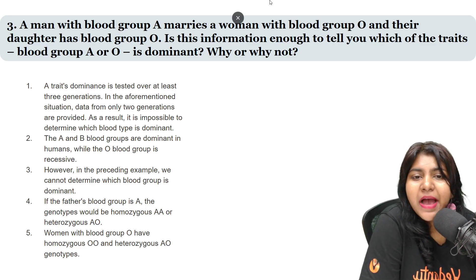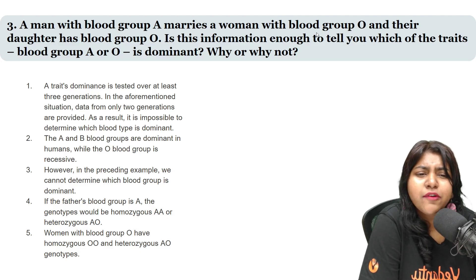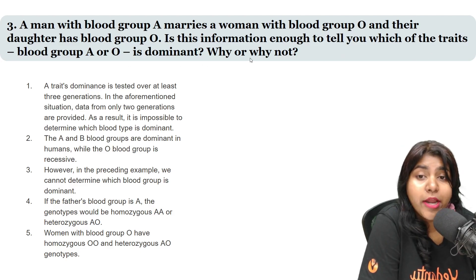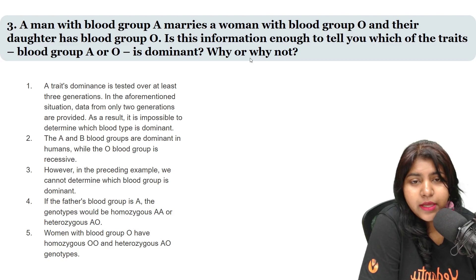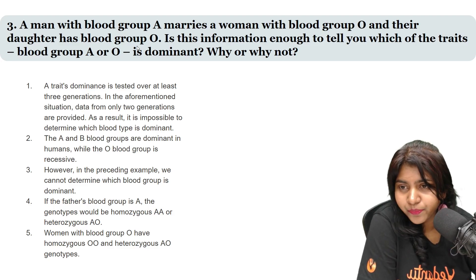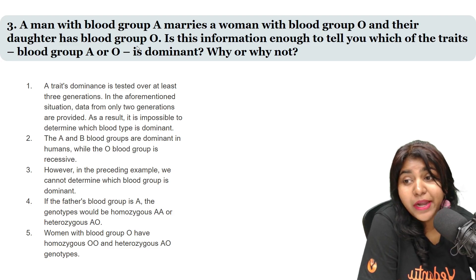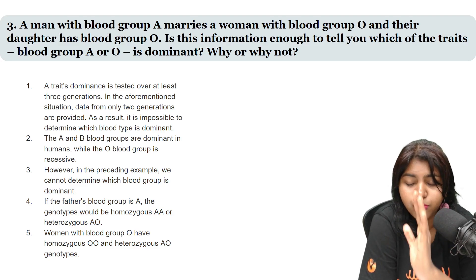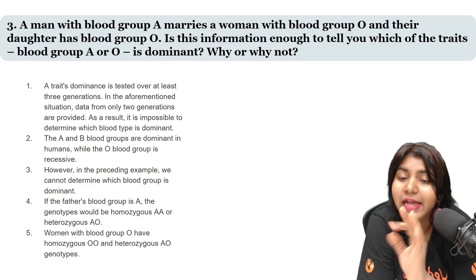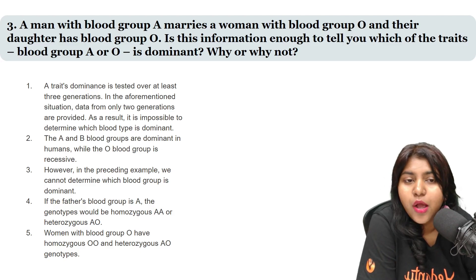Okay, this is the next question. A man with blood group A marries a woman with blood group O, and the daughter has blood group O. Is this information enough to tell you which of the traits — blood group — is dominant, and why or why not? So, what is the dominant or recessive blood group here? Is this information sufficient to determine dominance?